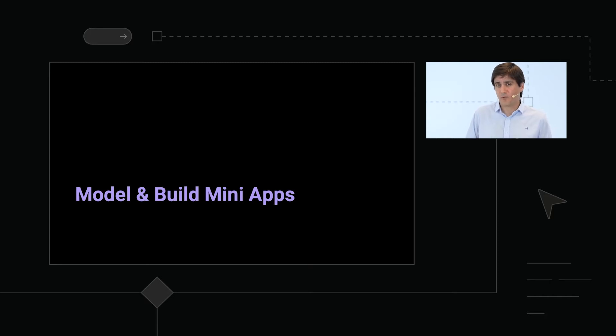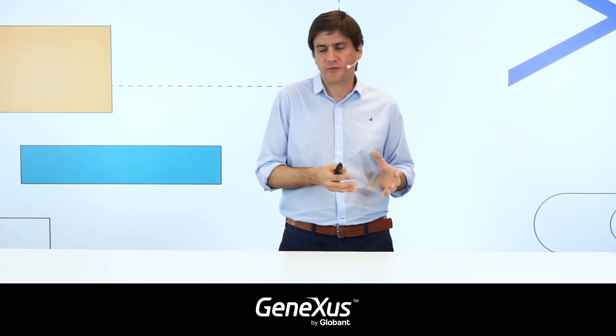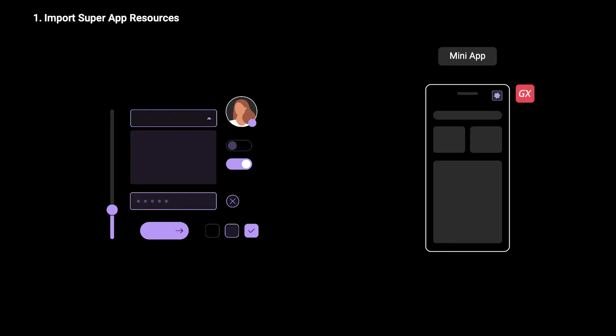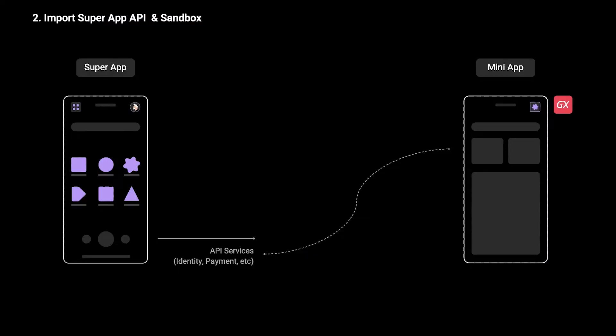Now let's talk about mini apps. To model and build mini apps, you don't need extra knowledge beyond what you already know to build a mobile solution with GeneXus. In the same way you use GeneXus to build Android and Apple applications, using the same knowledge, you can generate mini apps. The same application that you're publishing in the stores today can also be generated as a mini app to be incorporated in these platforms. If there are additional aspects to consider, super app owners may provide graphic resources — for example, a consistent payment button so that users know when they're interacting with the super app, or a button to close the mini app and go back to the super app.